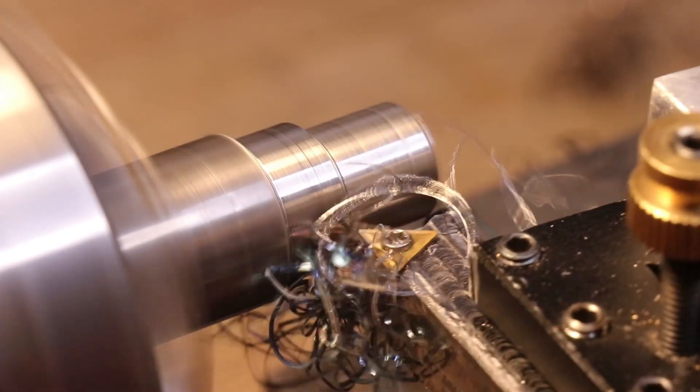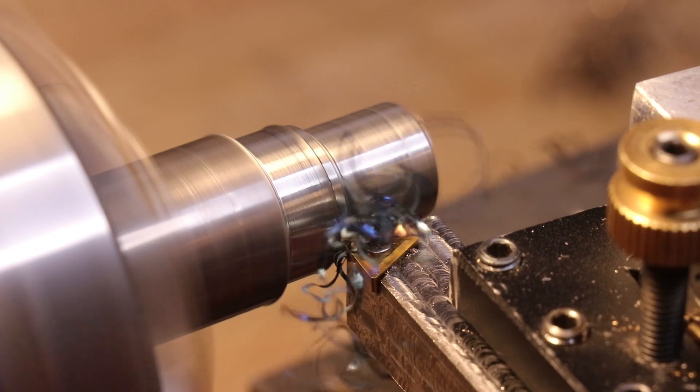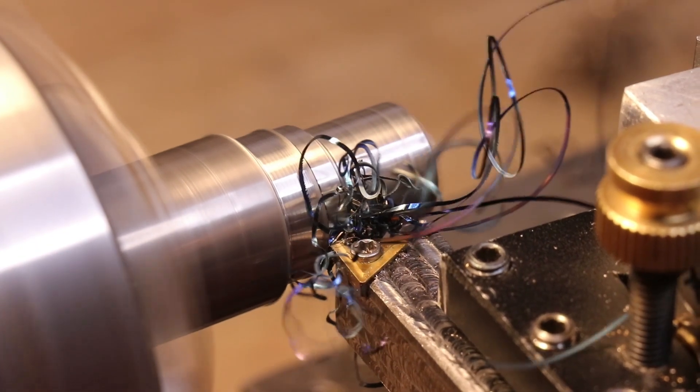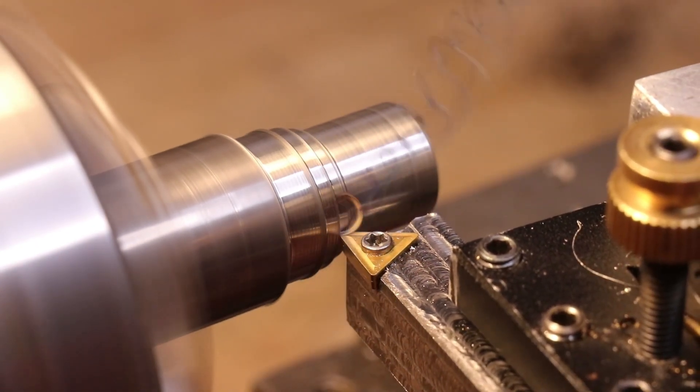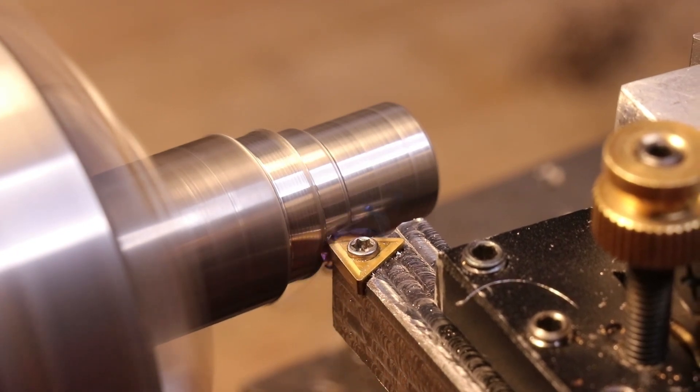If I drop the spindle speed to 1000 rpm, which is the lowest I can currently achieve, the torque is multiplied by 1.8, and it's able to take really deep cuts in a lot of metals.